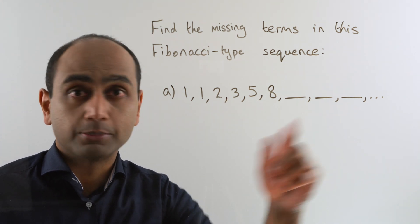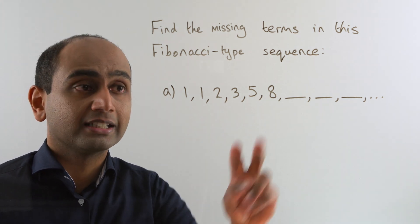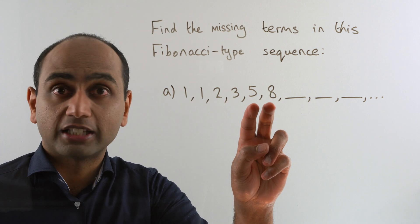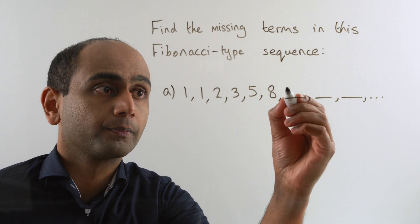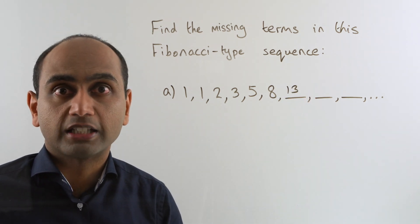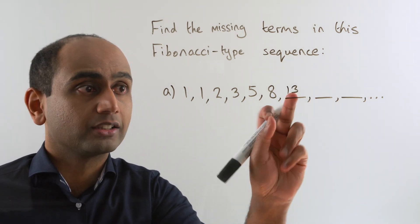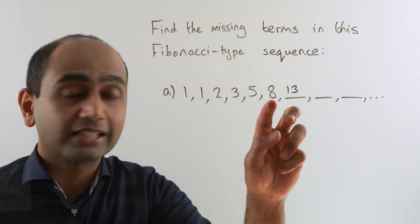To find these missing terms, all we have to do is add these two together first. 5 plus 8 is 13. To get the next one here we need to add the two previous terms, that's 8 and 13. 8 plus 13 is 21.